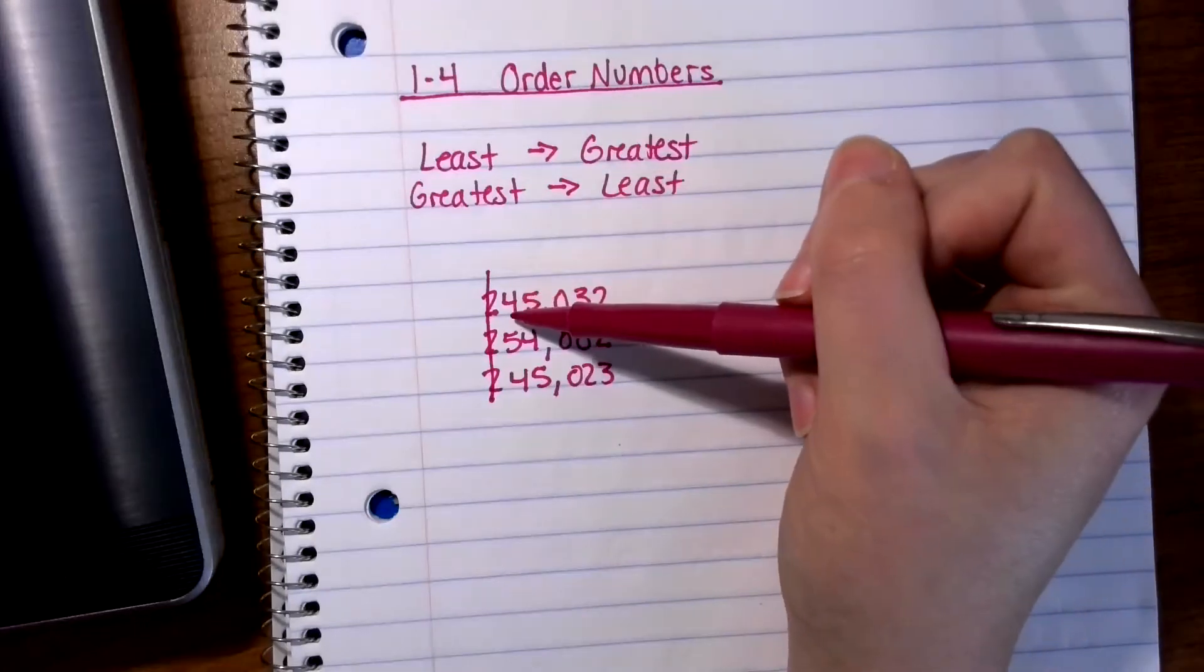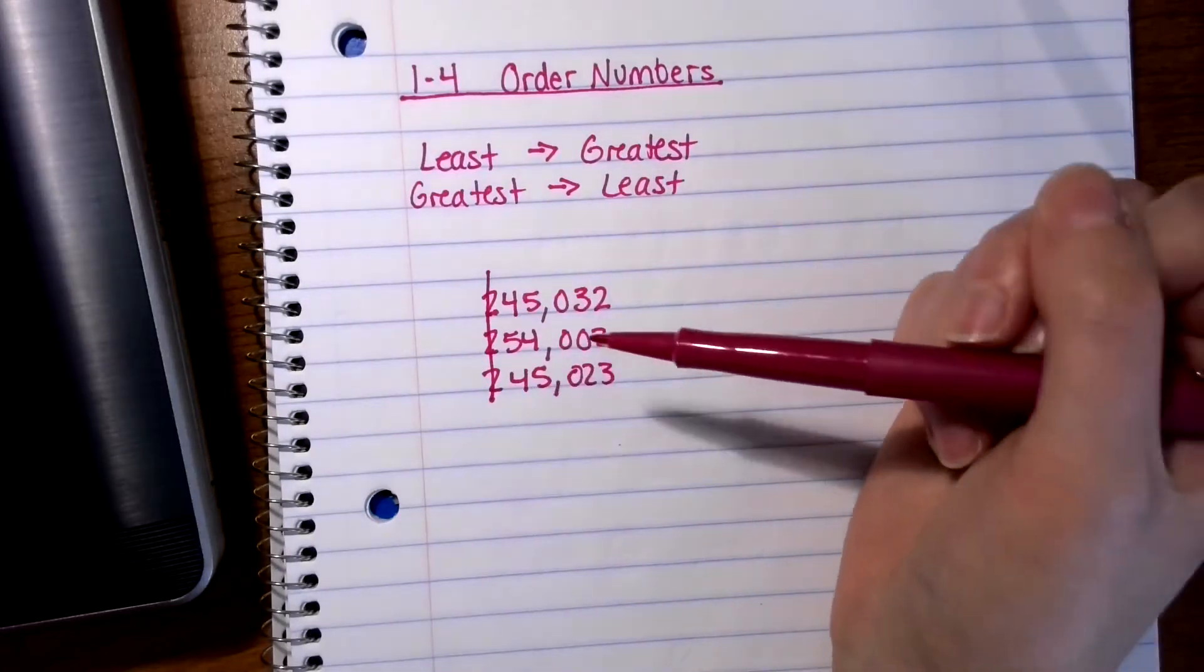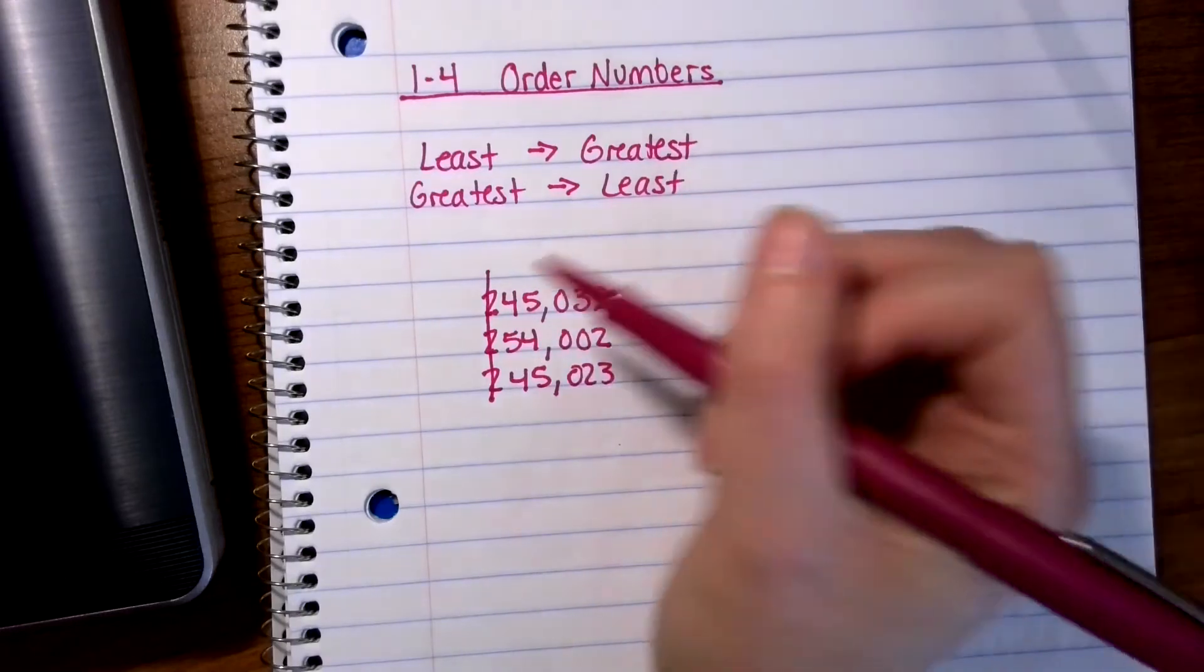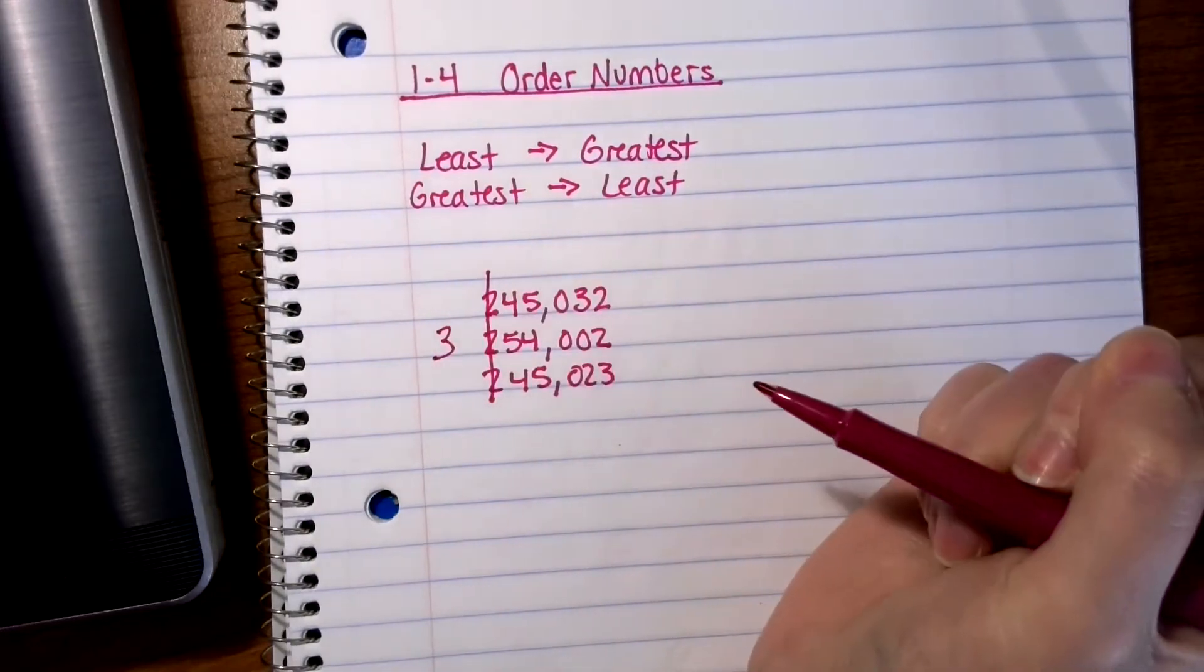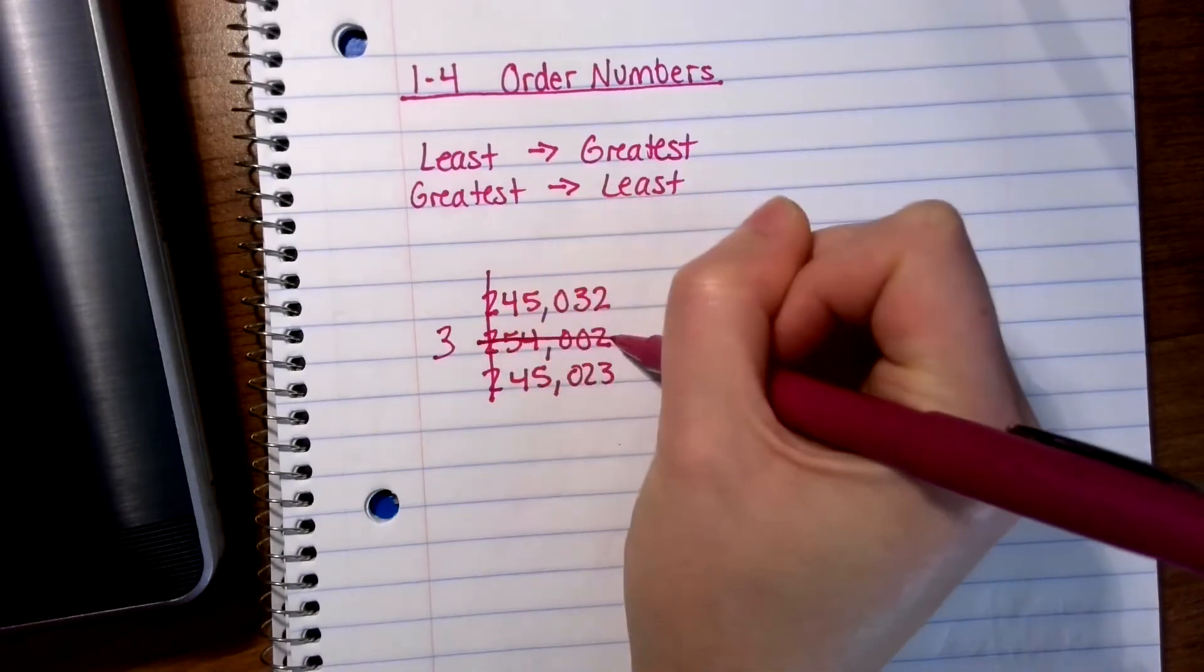Let's look at the next column. I have four, five, and four. Well, there I have one that is definitely bigger than the others. So I know that this is going to be my biggest number. So I'm going to label it as a three. Okay? This number is now done.